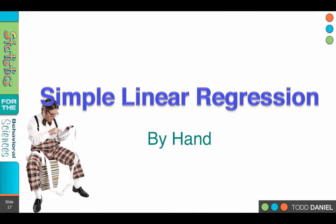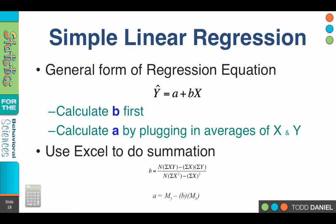So now it's time to figure out how we will calculate a and b for our simple linear regression by hand. Remember that the general form of a regression equation is ŷ = a + bx, and here's our strategy. We're going to calculate b first, then we're going to plug in b to our general regression equation and use that to calculate or back solve for a.